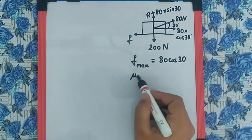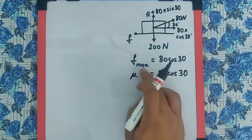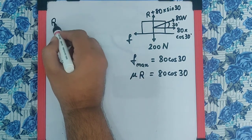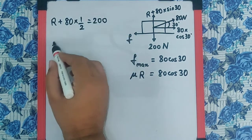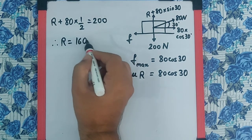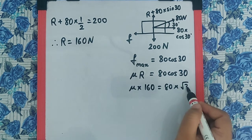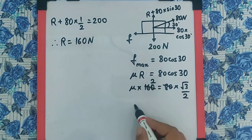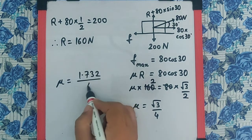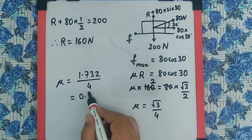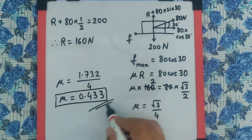From the diagram, the maximum friction will prevent the motion, so friction equals μR. From the vertical equilibrium: R plus 80 sine 30 equals 200, so R equals 200 minus 40, which is 160 Newton. Therefore μ times 160 equals 80 times cos 30 equals 80 times root 3 by 2. Solving, μ equals root 3 by 4, which is 1.732 divided by 4, giving μ equals 0.433.